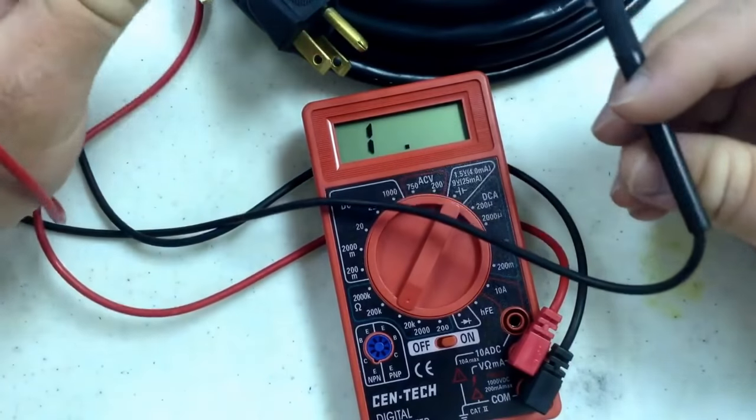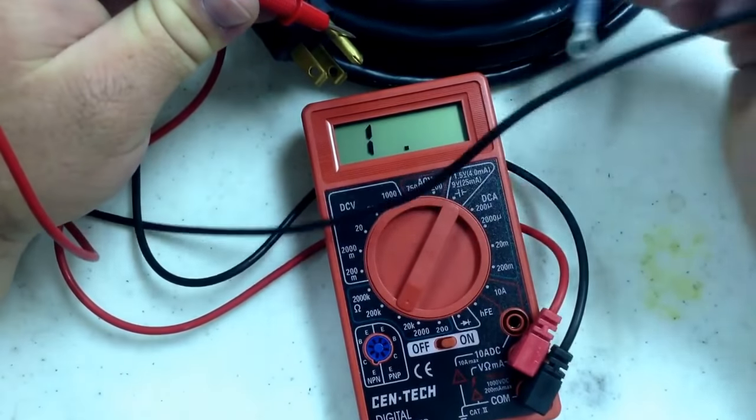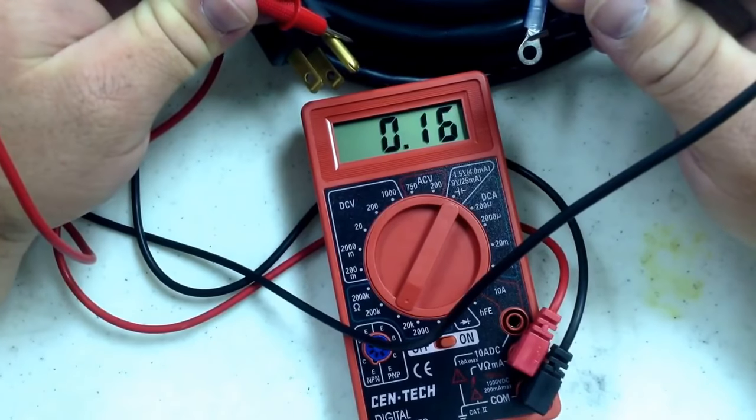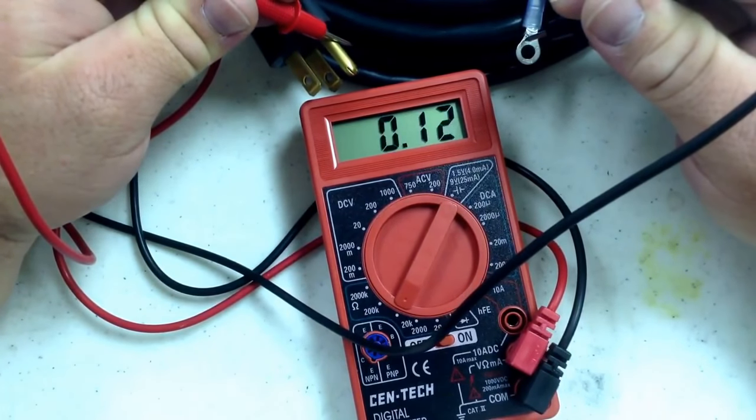So then what we'll do is we'll stick one end on the cord here and one end on the cord here, and again it should short it out to zero.